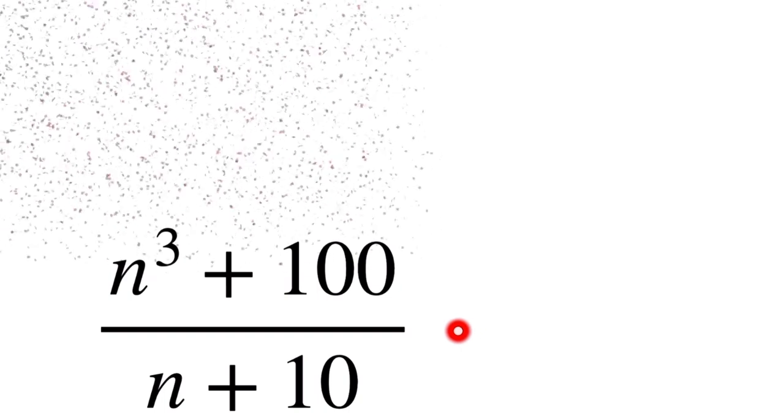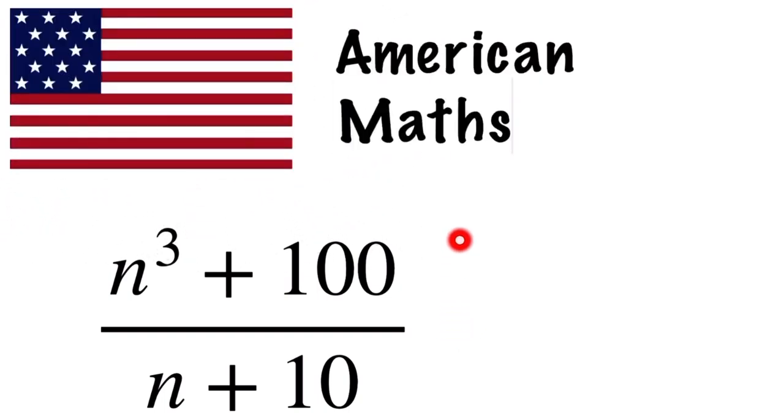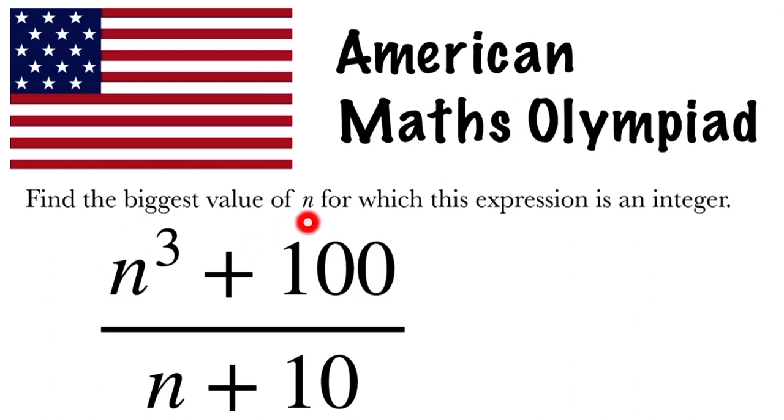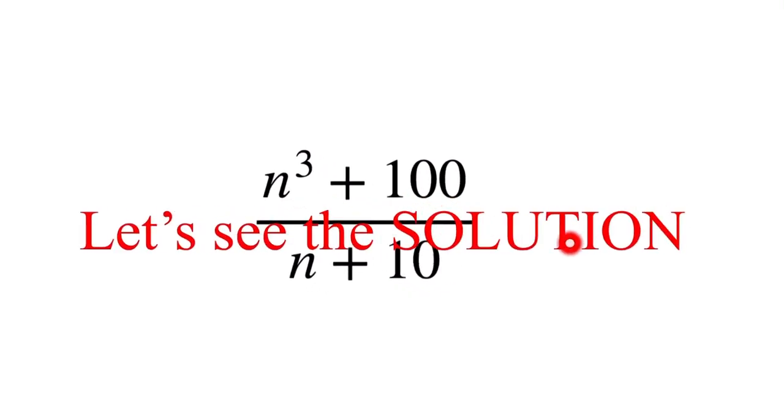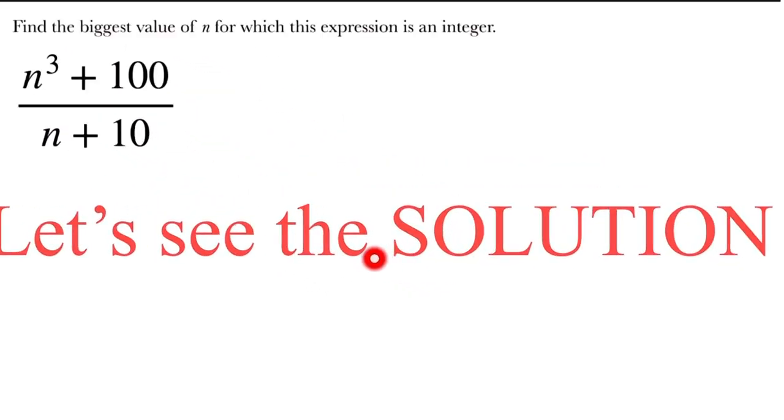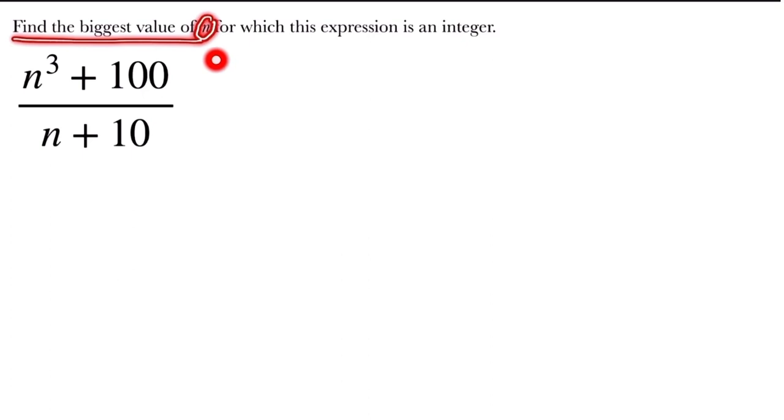Welcome back. Today we are going to solve this question taken from the American Maths Olympiad. In this question we have to find the biggest value of n for which this expression is an integer. Can you solve this? If you can, pause the video and take a try, otherwise let's see the solution.